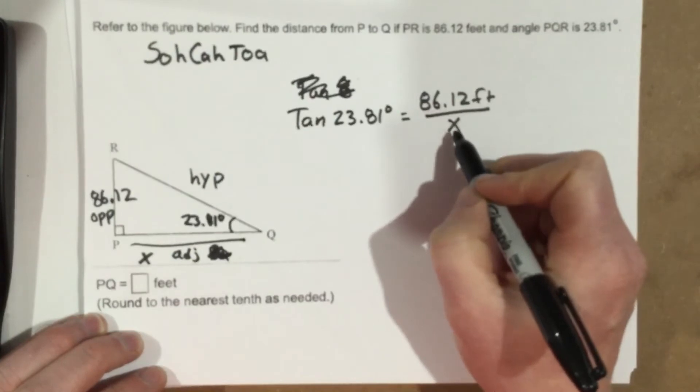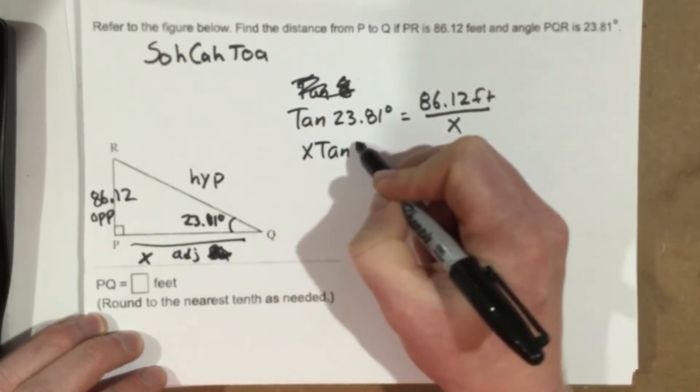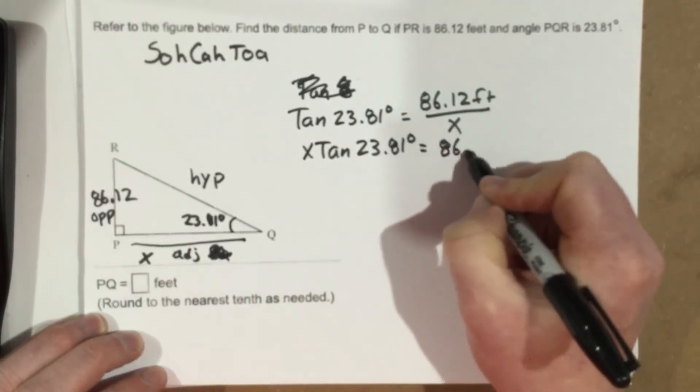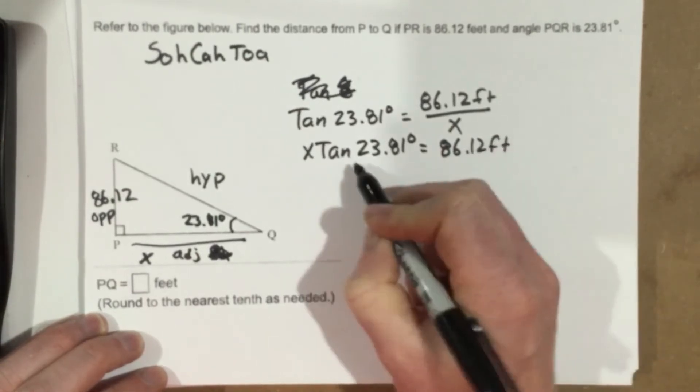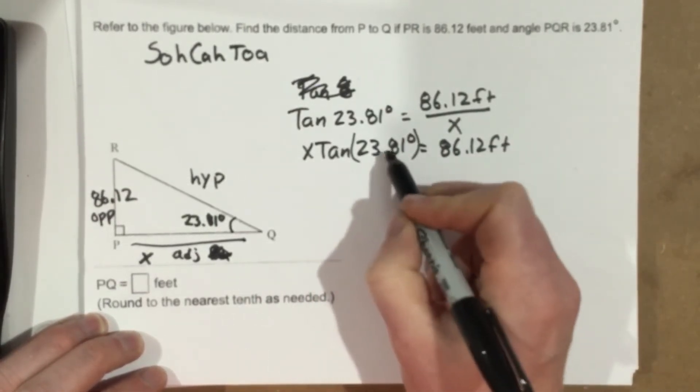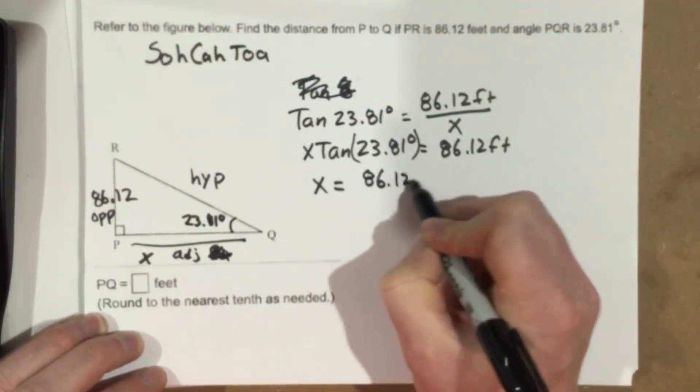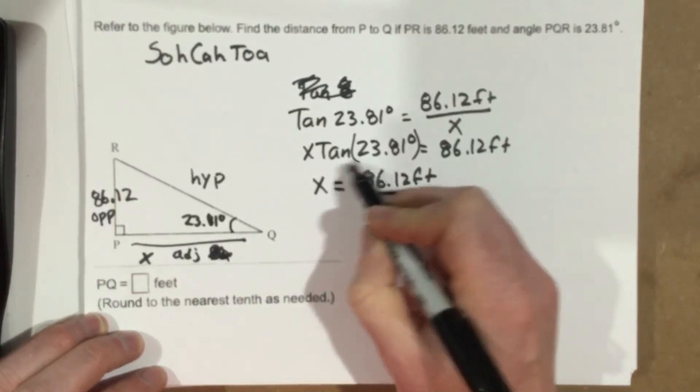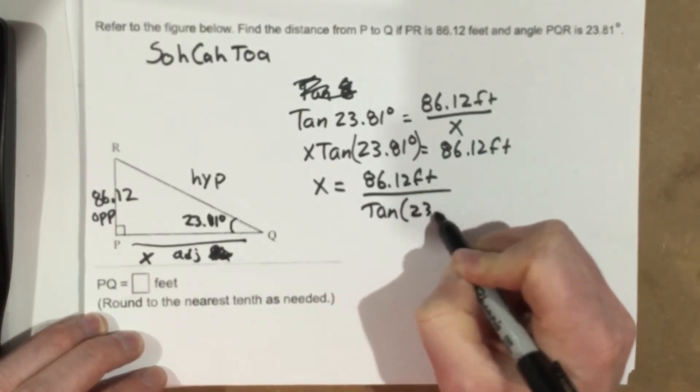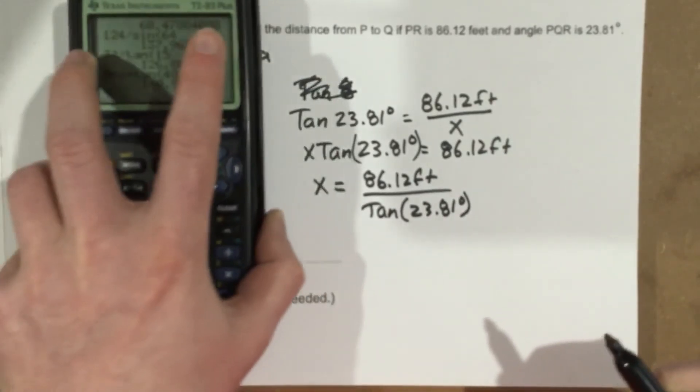Just like what we've done in the previous problems, we're going to multiply by the X. And then we'll divide by the tan 23.81. I like to put this in parentheses just so you know that it's the input for the tangent function. So 86.12 feet divided by now, tan 23.81 degrees.